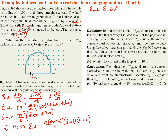Now we determine the direction of the induced EMF. The flux through the loop is out of the page and increasing — there's no negative sign in the function, so as time increases, the magnetic field increases. Because the induced field B_induced must oppose that increase, it must be directed into the page. Using the curled right-hand rule with our thumb pointing into the page and curling our fingers, we find that the induced current is clockwise around the loop.